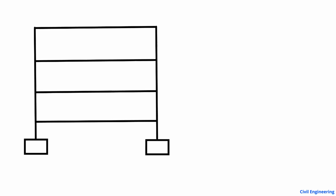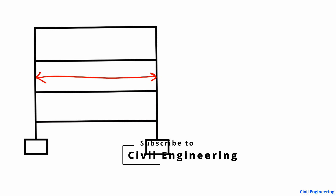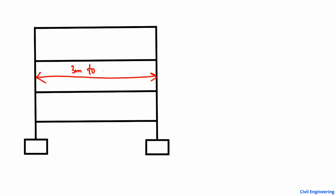Hello guys, welcome back to the Civil Engineering YouTube channel. Today's lecture we are going to discuss the distance between the columns in a residential building and also the size and dimensions of the column. The common distance between columns in a residential building ranges from 3 meters to 6 meters, or we can say from 10 feet to 16 feet.